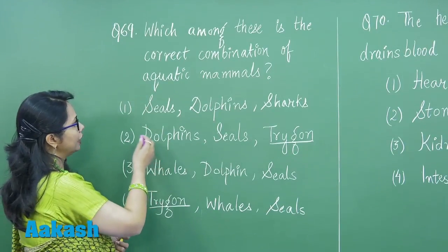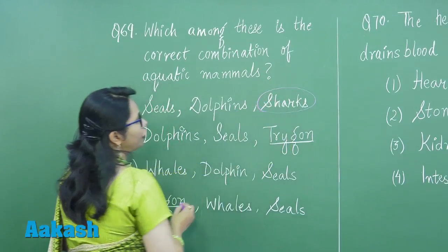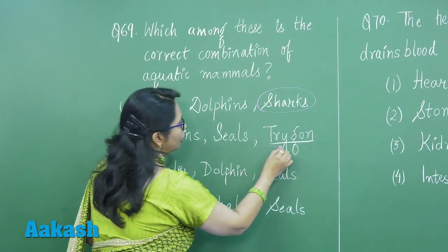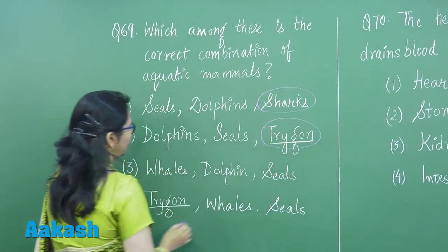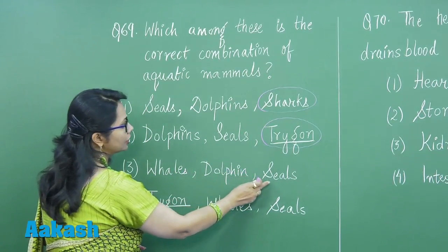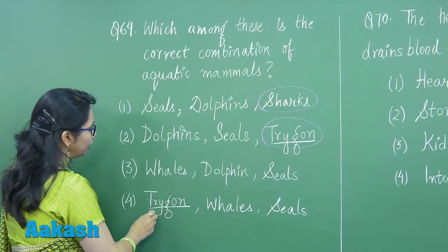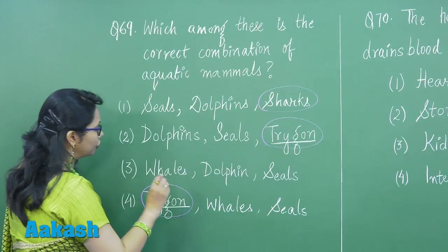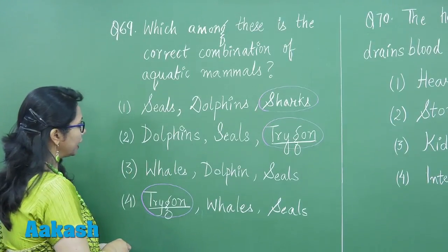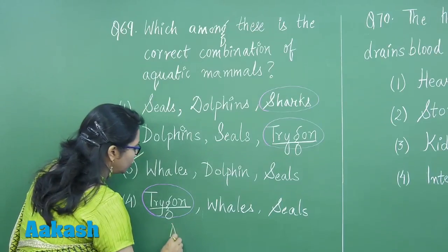In the first option, sharks are given, which are cartilaginous fish. Second option has trigon, again a cartilaginous fish. Third option has whales, dolphins, and seals — all three are mammals. Fourth option again has trigon, which is a cartilaginous fish. So these three choices are eliminated and the answer is option three.